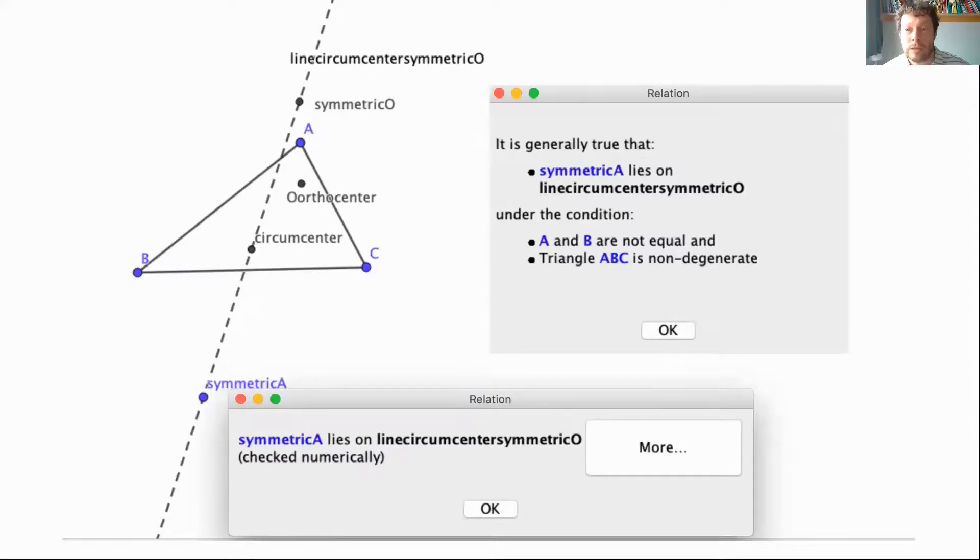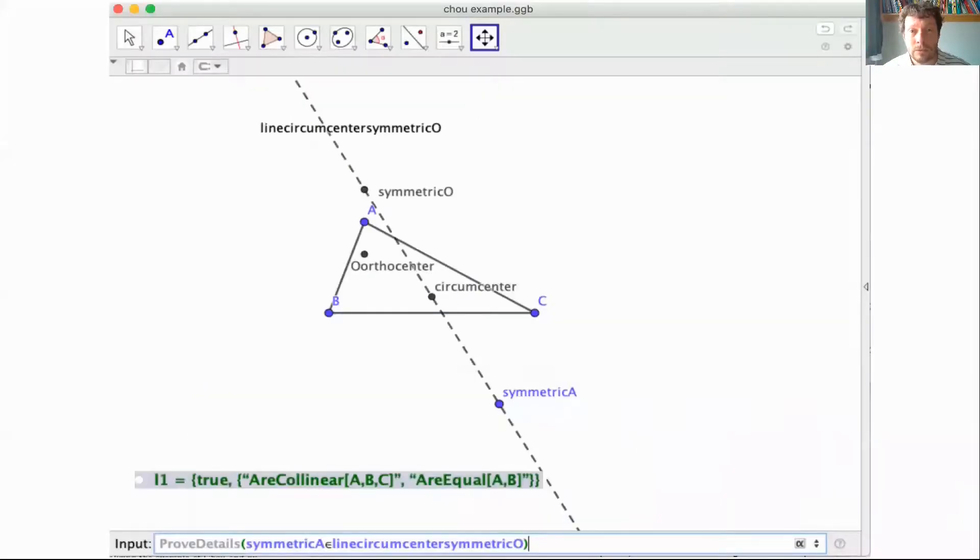We conjecture that symmetric A lies on the line defined by the circumcenter and the symmetric of the orthocenter. This geometric statement can be obtained in GeoGebra using the relation tool, which provides the statement under specific conditions. The second way to obtain information is to directly prove a statement using the prove or prove details command in GeoGebra.